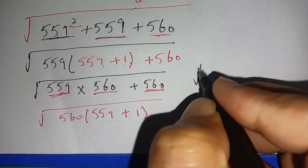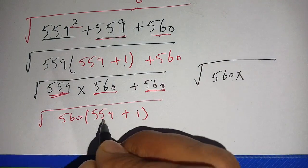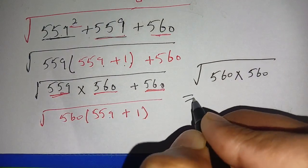On the next step, we get square root of 560 times 559 plus 1, it becomes 560.